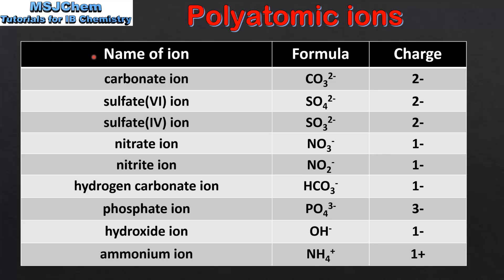We'll end the video by looking at examples of polyatomic ions, their formulas, and their charges. Starting with the carbonate ion, which is CO3²⁻. Next we have the sulfate six ion and the sulfate four ion. Note they differ by the oxidation state of the sulfur, which is +6 in the sulfate six ion and +4 in the sulfate four ion.